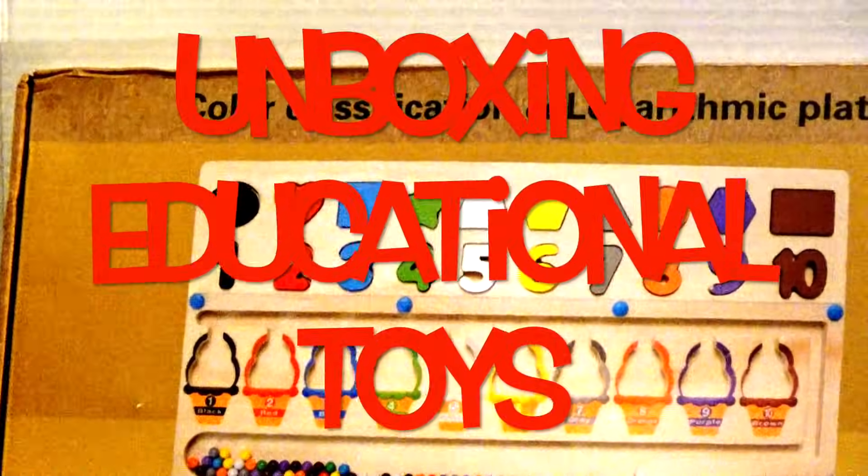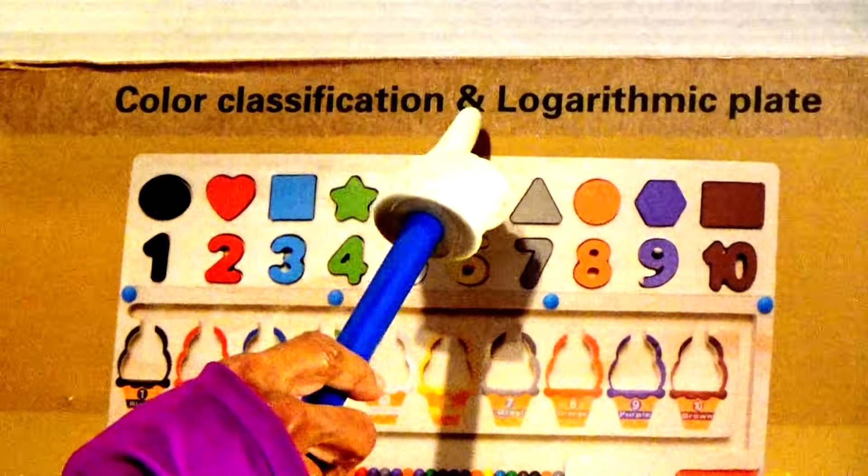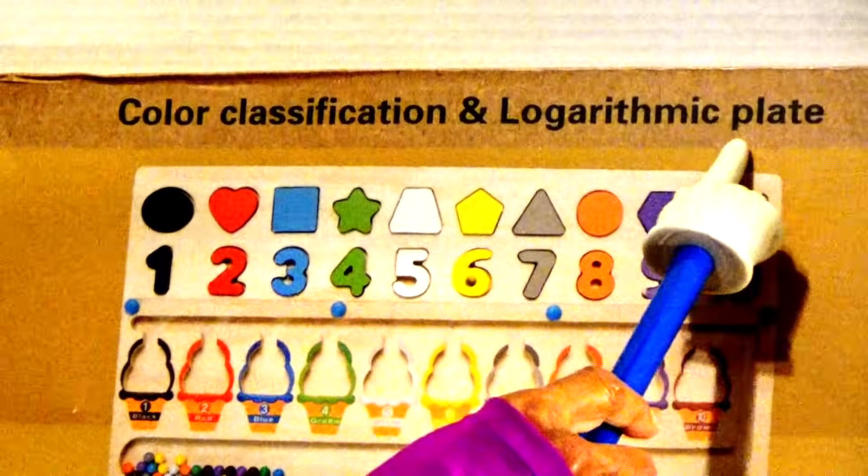I found this on the clearance rack. It's called Color Classification and Logarithmic Plate.